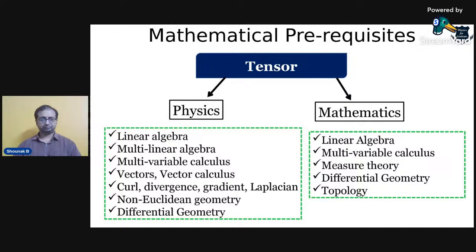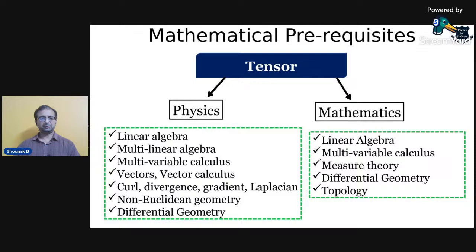If you're willing to learn physics, the things you need to know apart from linear algebra and multivariable calculus are obviously vectors and vector calculus. I would also request you to learn curl, divergence, gradient, and the Laplacian, and go a bit into non-Euclidean geometry which covers differential geometry. If you're going purely into mathematics, you should learn linear algebra, multivariable calculus, measure theory, differential geometry, and some topology.